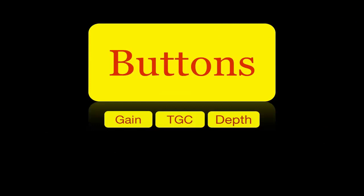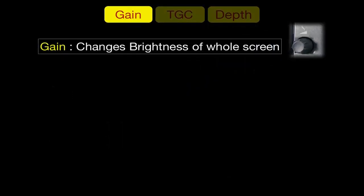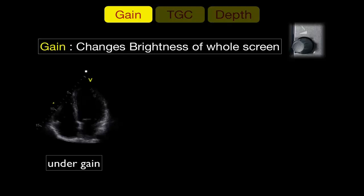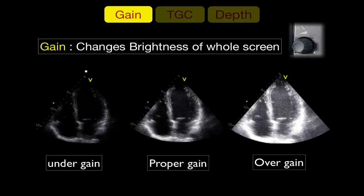Regarding important buttons: Gain is probably the most common button you will use. It simply changes the brightness of the whole screen. For example, in this cardiac view, if the image is very dark we are under-gained, and if the image is very bright we are over-gained. You want to adjust the brightness so you can see the cardiac cavity as a black area while still having good delineation of the myocardium.